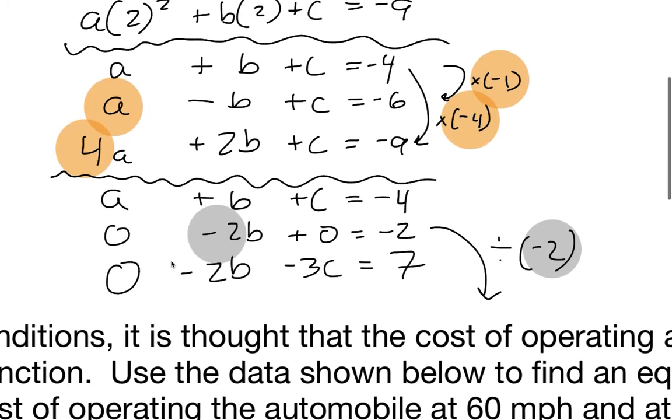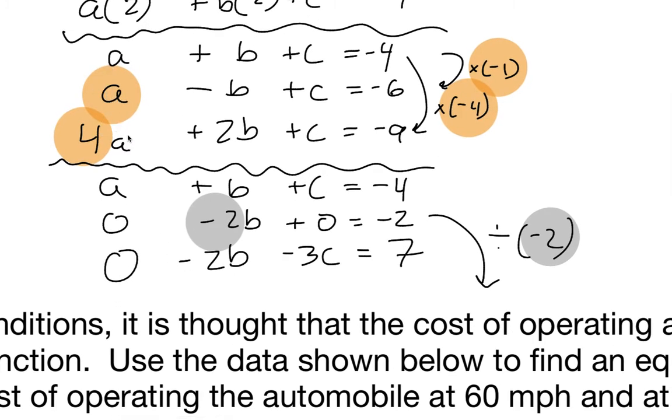The roadmap says that we have to put zeros right here. I have C at this A. That means I have to multiply the entire top equation by negative one. A times negative one plus A is zero. Good. B times negative one plus negative B is negative two B. C times negative one plus C is zero. Oh, good. We get a zero here. Negative four times negative one is positive four plus negative six is negative two. Roadmap says we need a zero right here. I see the four. I'm going to multiply the top equation by negative four to get elimination. A times negative four plus positive four A gives you zero. B times negative four is negative four B plus two B is negative two B. C times negative four is negative four C plus positive C is negative three C. Negative four times negative four is positive 16 plus negative nine is seven.